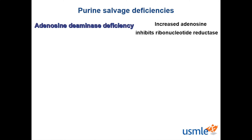Since ribonucleotide reductase is inhibited in the case of ADA deficiency, nucleotides can't be produced, which mostly affects cells that need to divide a lot, such as those in the immune system, causing lymphotoxicity. Therefore, patients with ADA deficiency will have a low lymphocyte count and can also have SCID, or severe combined immunodeficiency disease. SCID is a B and T cell disorder with two different inheritance patterns. SCID due to ADA deficiency is autosomal recessive, while an X-linked inheritance pattern is due to the defective interleukin-2 receptor gamma chain. It's important to keep these minor differences in check.